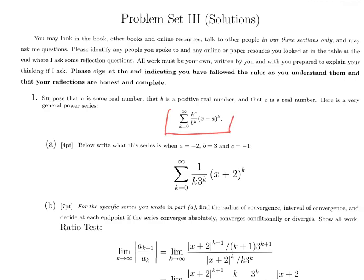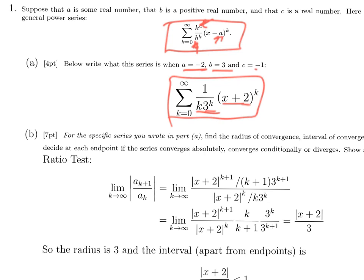Here I give you a very general power series with three variable coefficients: a, which is going to be the center of the series; b, which governs the exponential term; and c, which is the exponent on the polynomial term. For example, when a is negative 2, we get x plus 2 to the k; b is 3, we get 3 to the k; and c is negative 1, we get k to the minus c, which is the same as 1 over k. So we end up with the sum of 1 over k times 3 to the k, times x plus 2 to the k.